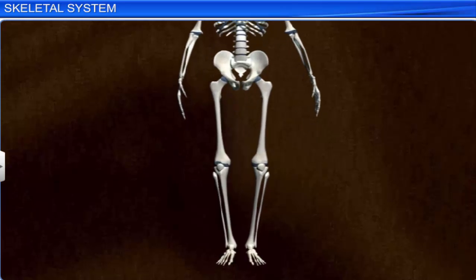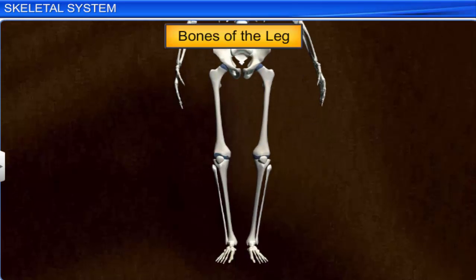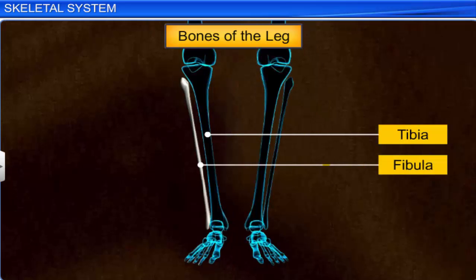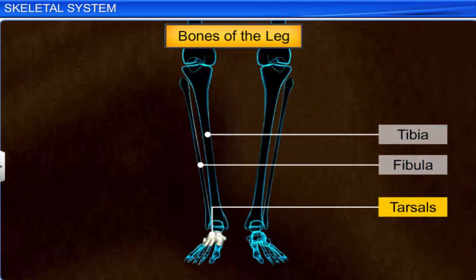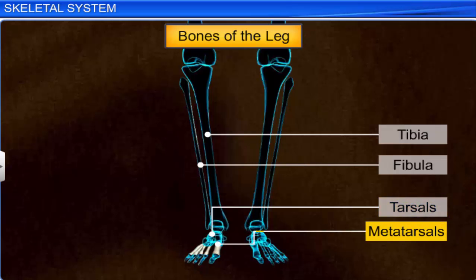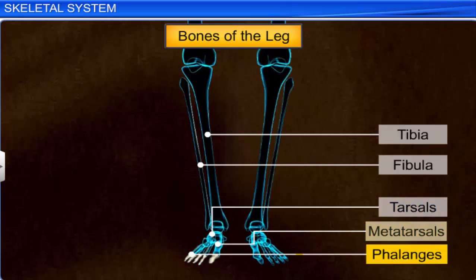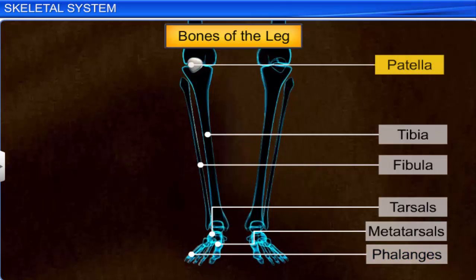The bones of the hind limb or leg consist of the femur or thigh bone, tibia, and fibula, 7 tarsals or ankle bones, 5 metatarsals, and 14 phalanges. Another bone called the patella, or kneecap, is found on the ventral side of the knee.